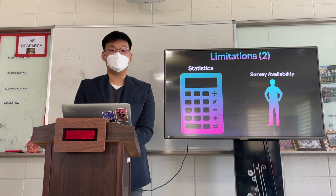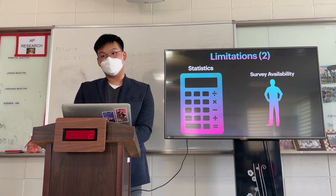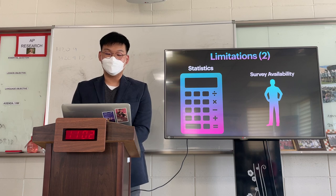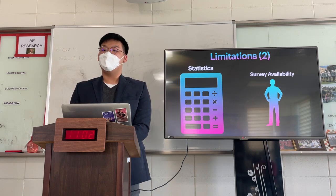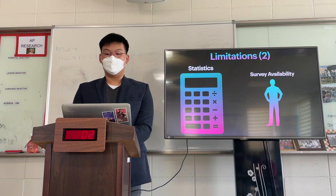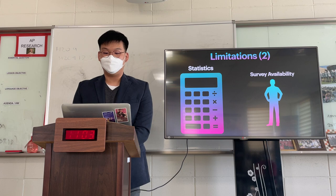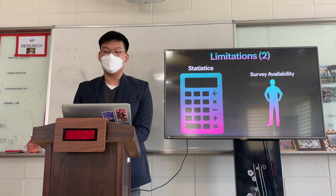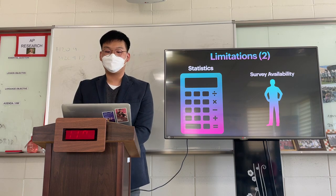My second limitation concerns my statistical background. For the Bogardus Social Distance Scale, you cannot fully assess social desirability without calculating the Pearson r correlation coefficient, but due to limitations in my statistical background, I could not perform such calculations and had to rely on averages. My third limitation is survey availability: I could not send surveys directly to parents, having to reach them through intermediaries, limiting me to about 50 parent responses focused on those residing on Jeju Island.